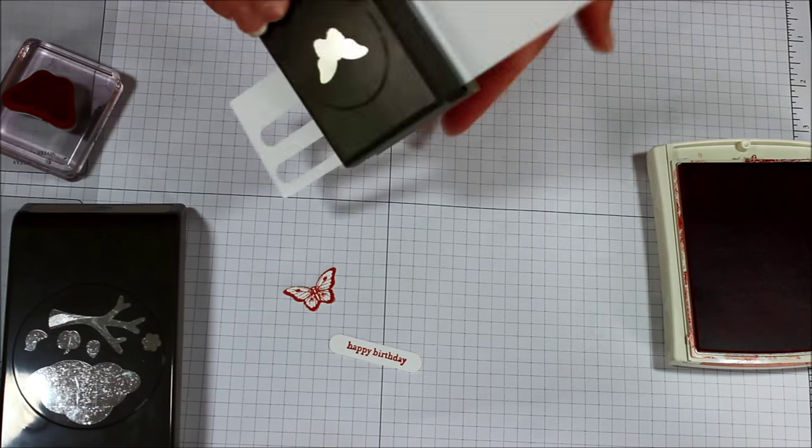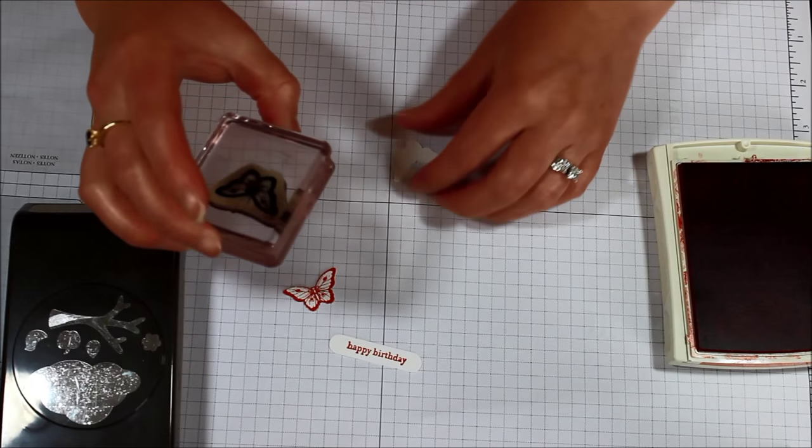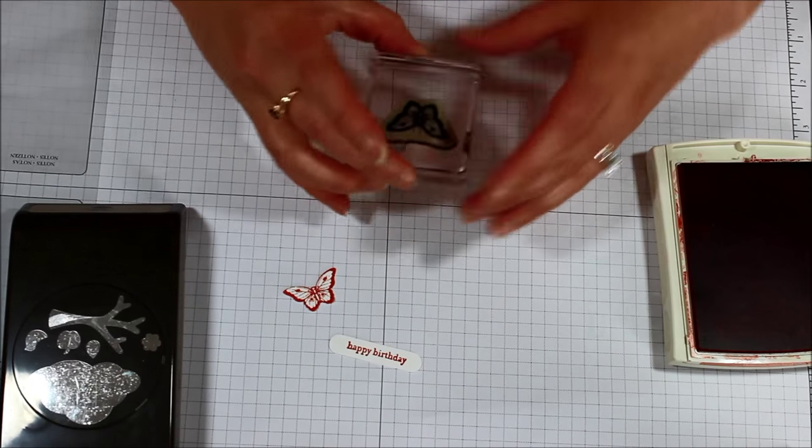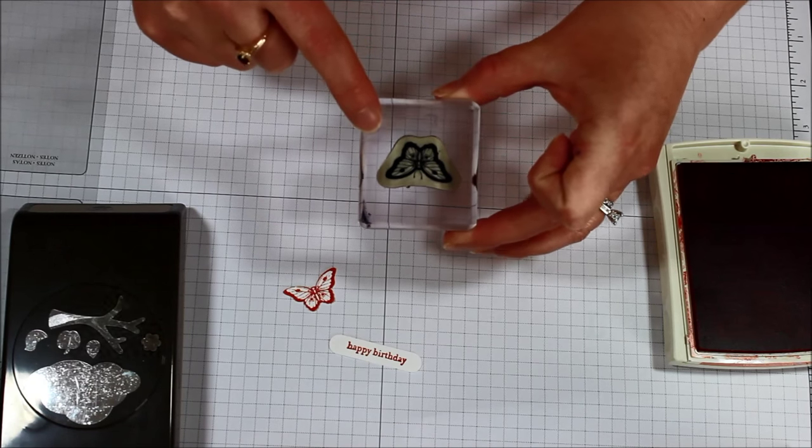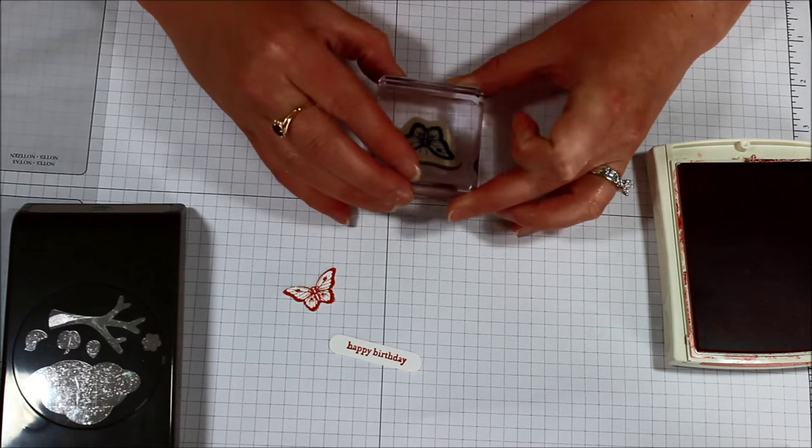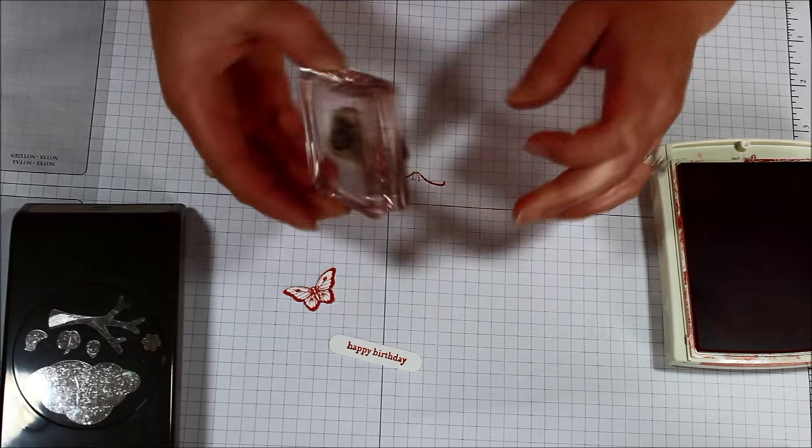But if I punched first, it is so little. And this is a clear mount stamp set, but yet the butterfly is a lot smaller than that image of the rubber is. So it would be so hard. And I'm going to try my best. Maybe right there.